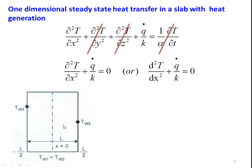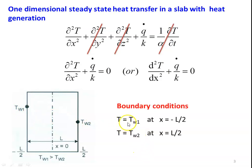We consider a slab to solve the problem and find out the temperature distribution. We consider a slab of length L, measuring the length from the center. At the center x = 0, on the right hand side x = L/2, and the left hand side x = -L/2. The wall temperatures are TW1 on the left hand side and TW2 on the right hand side. The boundary conditions are T = TW1 at x = -L/2 and T = TW2 at x = L/2.